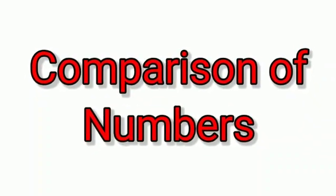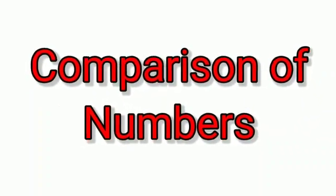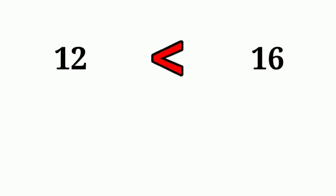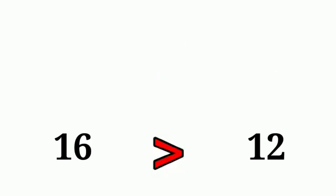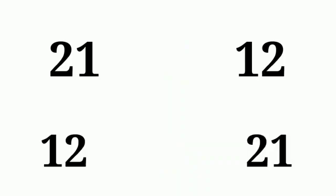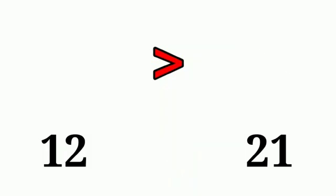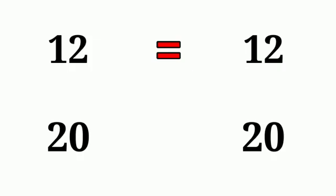Comparison of numbers. Twelve is less than sixteen. Sixteen is greater than twelve. Twenty-one is greater than twelve, and twelve is less than twenty-one. Twelve is equal to twelve. Twenty is equal to twenty.